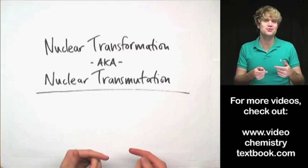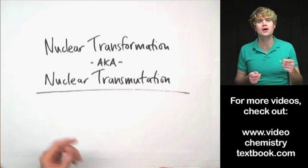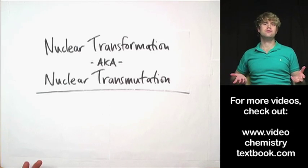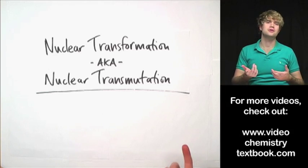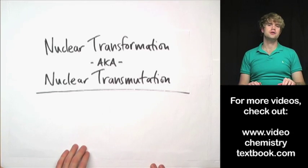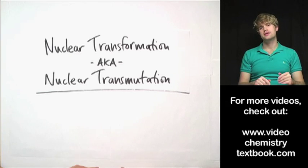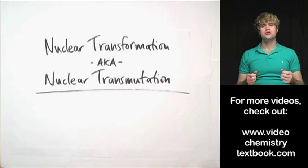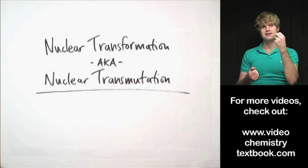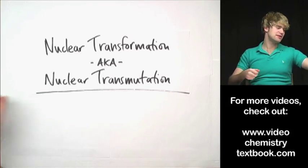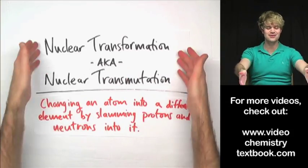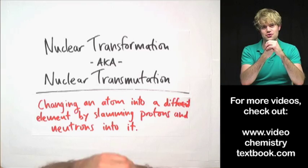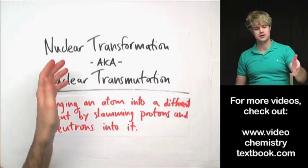So to change one element into another, you've got to change the number of protons that are in its nucleus. You've already seen one way that one element can turn into another, and that's in radioactive decay, where you have something like alpha decay or beta decay or positron decay that changes the number of protons and neutrons in the nucleus. But decay processes just happen by themselves in nature. In the lab, scientists are able to make this change happen by taking an atom and slamming protons and neutrons into it. So that's what we're going to talk about in this video — nuclear transformation.